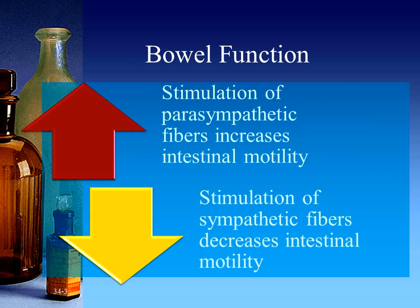When we're talking about motility, we're talking about two things: too much motility or not enough motility. If you stimulate the parasympathetic nervous system, you will increase intestinal motility — the parasympathetic likes to digest food. If you stimulate the sympathetic nervous system, you will decrease motility. That's the fight-or-flight response; when you want to run, you do not want to be digesting food.